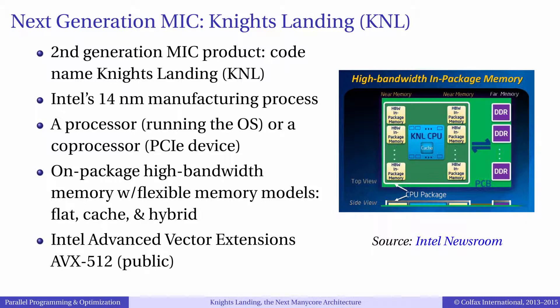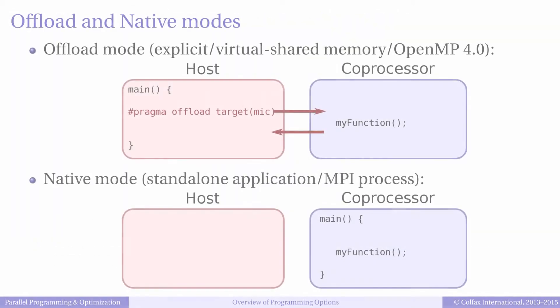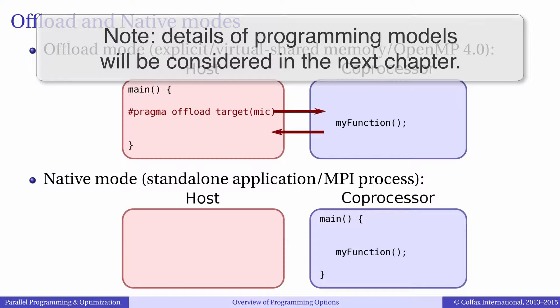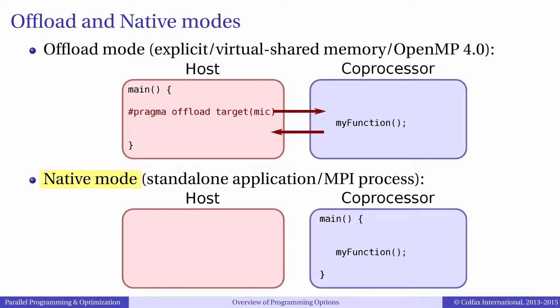What does it mean for developers? The difference between a PCIe endpoint coprocessor and a standalone processor means that data movement may be implemented differently in code. However, users that are already happy with the PCIe form factor of Xeon Phi will be able to use KNL in the PCIe form factor, in other words, as a coprocessor. Likewise, programmers that want to treat Xeon Phi as a standalone computer node can do it today using the native programming model with bridged networking and virtualized InfiniBand. We will demonstrate both those usage models in this course.